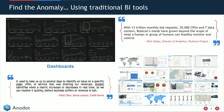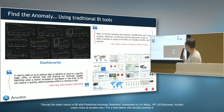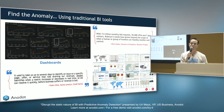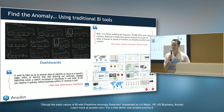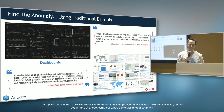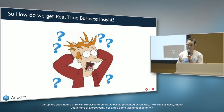You can see some anomaly there, but it's very hard to track. I like this quote from Rubicon Project — Rich Gallagher, director of analytics — talking about the fact that with 13 trillion monthly bid requests, 55,000 CPUs and seven data centers, Rubicon has gone beyond the scope of what a human or group of humans can feasibly monitor and control. You cannot put an army of people staring at screens trying to understand what is going on.